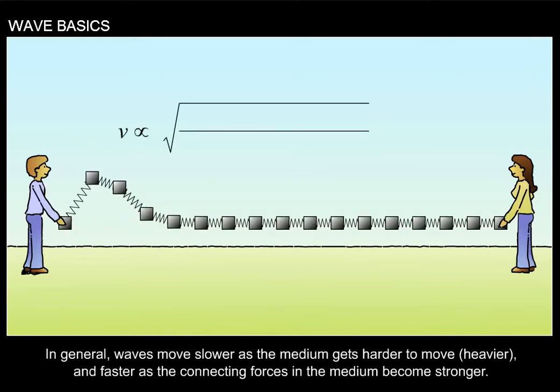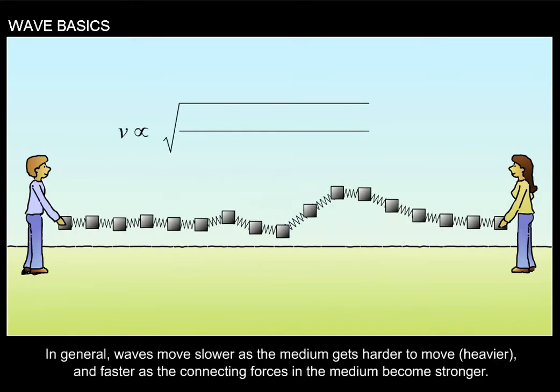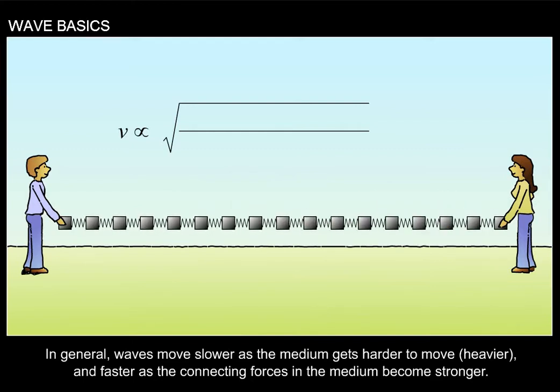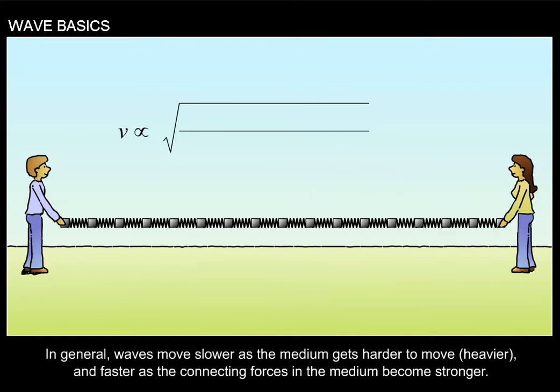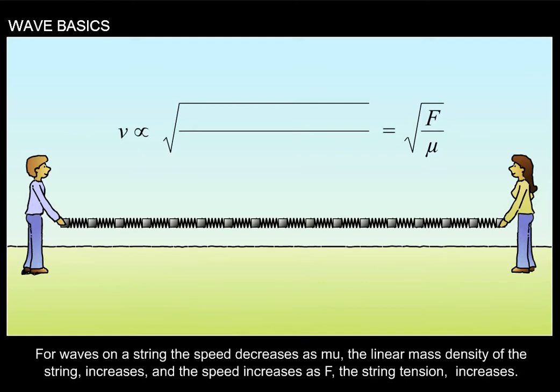In general, waves move slower as the medium gets harder to move, heavier, and faster as the connecting forces in the medium become stronger. For waves on a string, the speed decreases as mu, the linear mass density of the string, increases, and the speed increases as F, the string tension, increases.